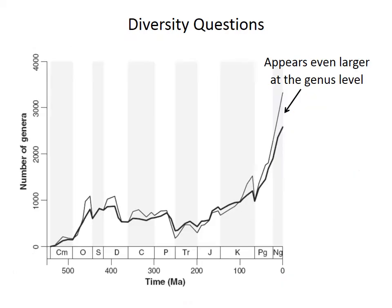This is a similar curve, but at the genus level instead of the family level, using the same Sepkoski data. One thing you'll notice is that the Cenozoic increase is much larger at this taxonomic level than it was in the previous family-level curve.